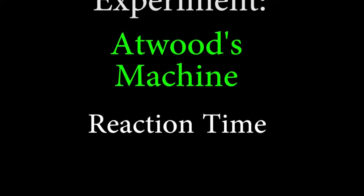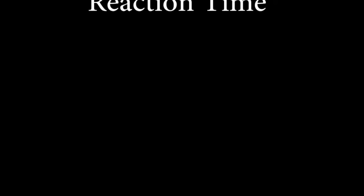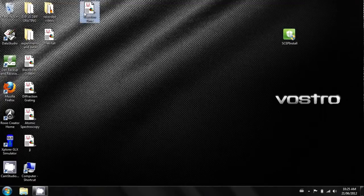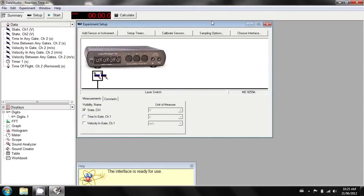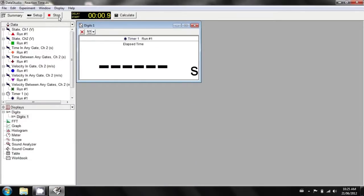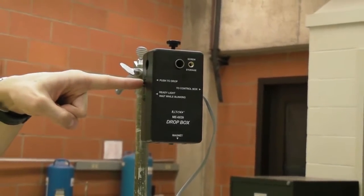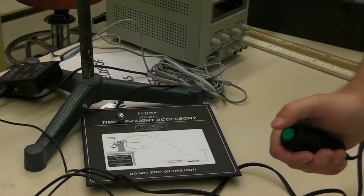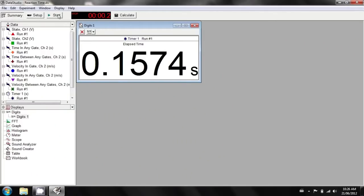There are stations in the lab set up where you can measure reaction time. Here's how you do it. Open the reaction time file on the desktop. Hide the interface display window so that you can see the time display. Press start to arm Data Studio for recording. Have a friend drop the ball and as soon as you hear it land, press the trigger. That will display your reaction time.